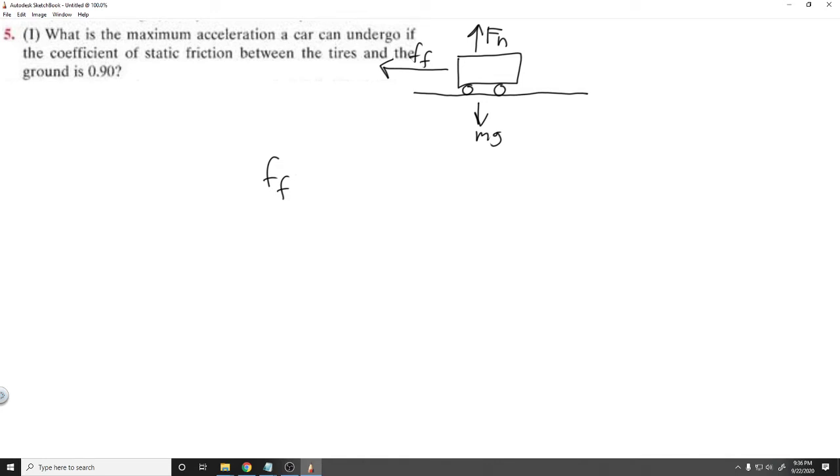So f sub f, the force of friction, is going to be equal to mu sub s, which is your coefficient of static friction, which they give us, which is 0.9 times your normal force.